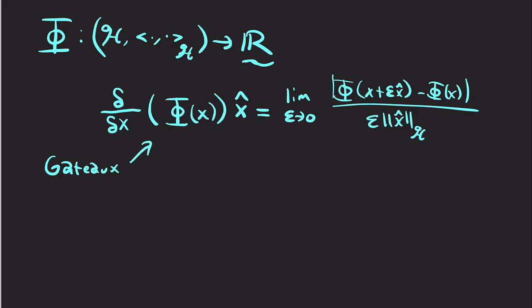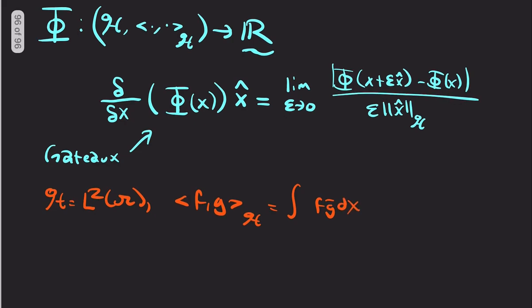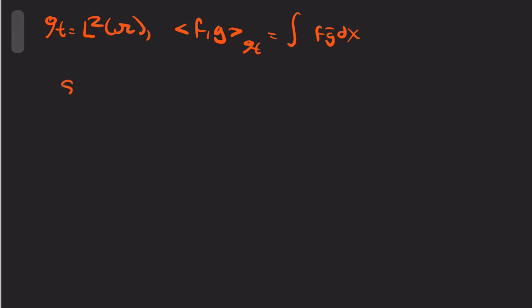So, I'll just show the Fréchet derivative with an example here. Let's go to orange here. So, let's take φ. First of all, H equals L2 of Ω. And our inner product is the standard inner product here, where bar is complex conjugate. And φ of, let's call it u, is defined to be the integral of our data misfit, where d was our data.